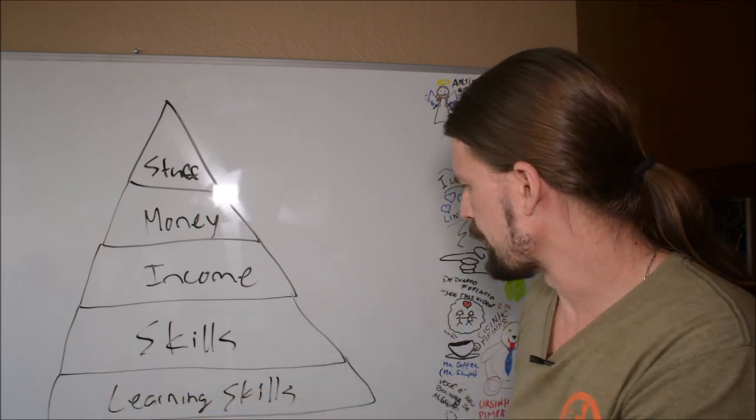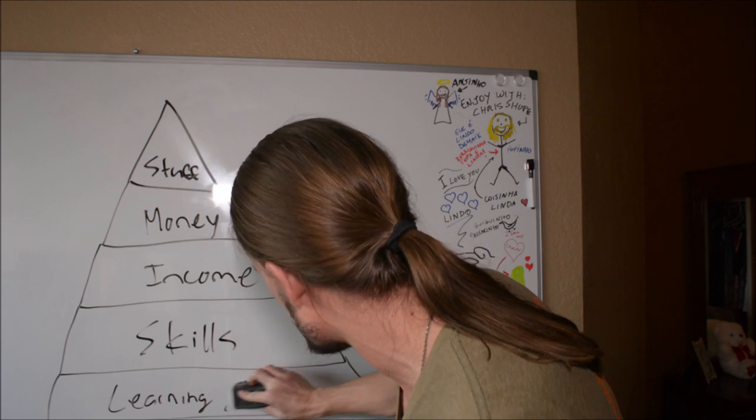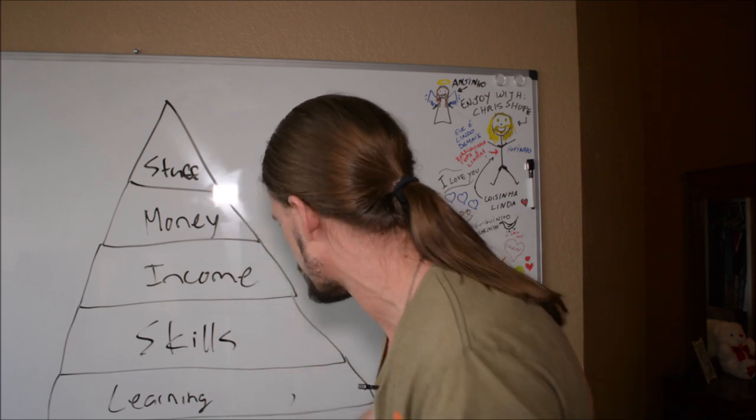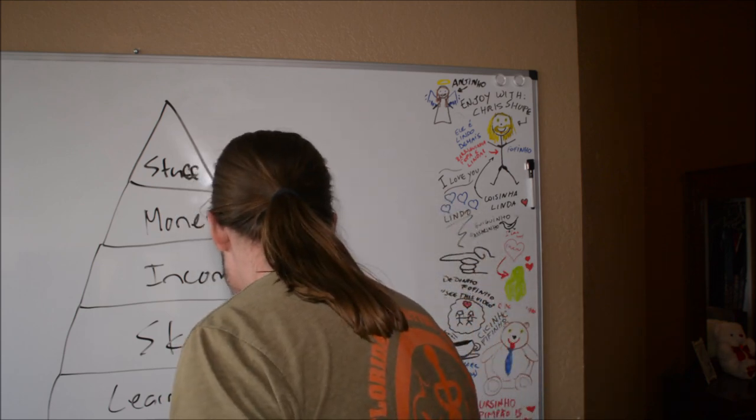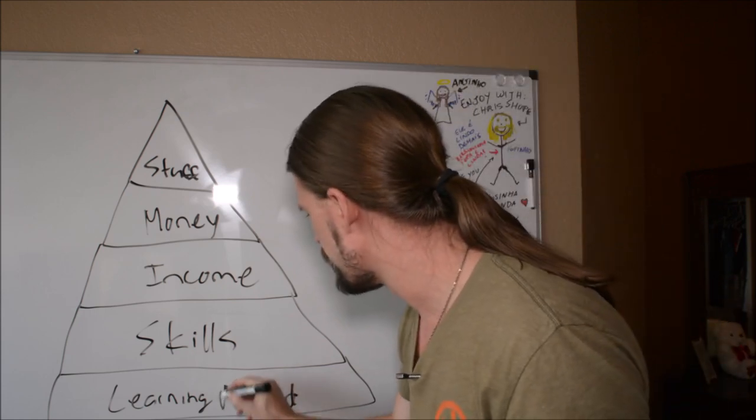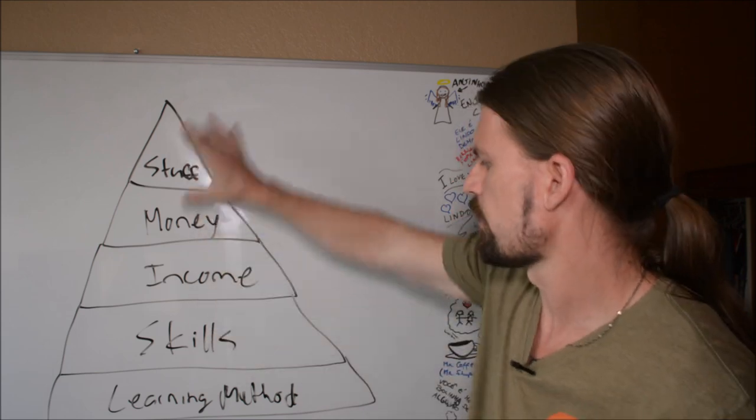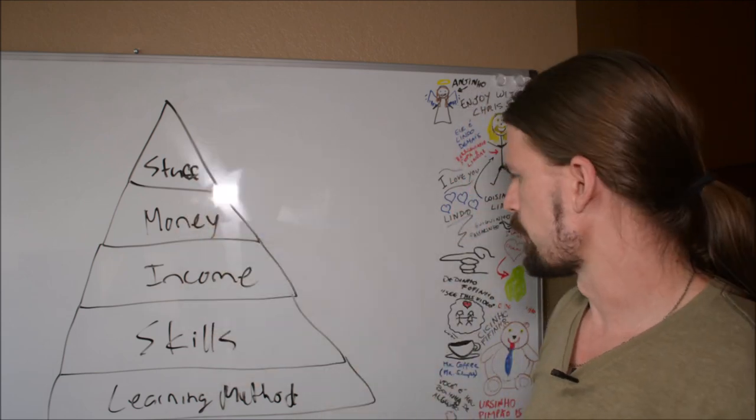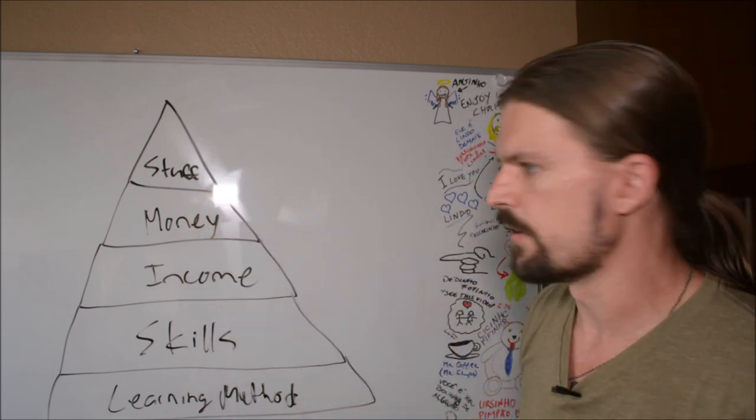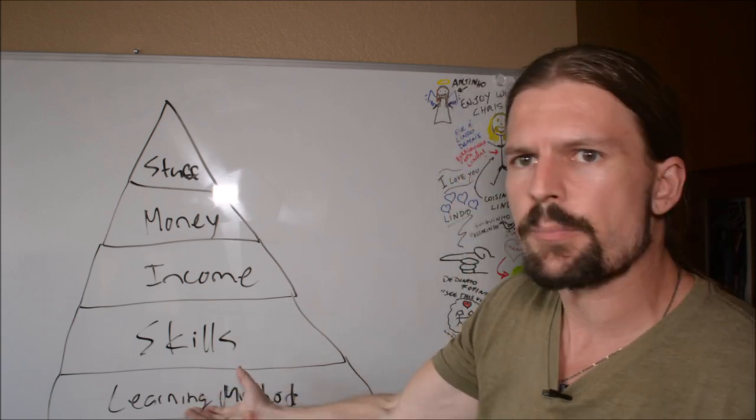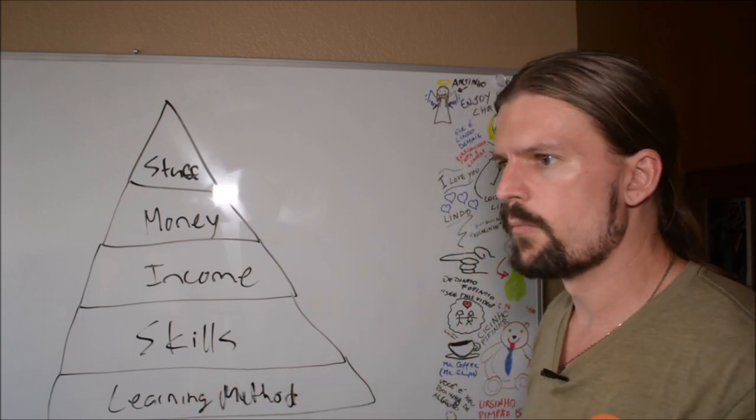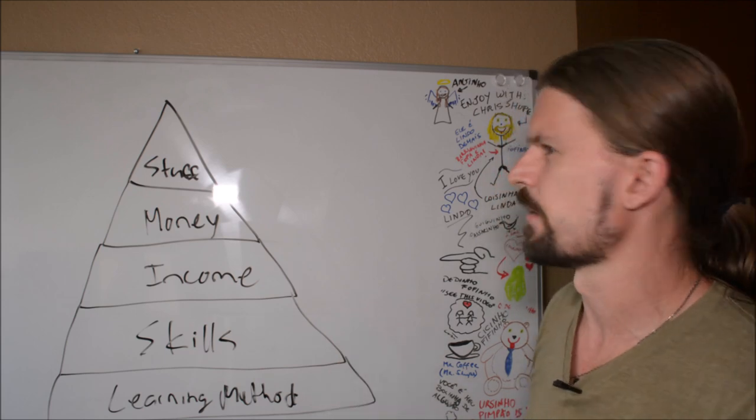And then the very bottom of the pyramid here is learning method. So I'm saying that if you have a learning method, then you have everything that you need for the rest of the pyramid here. Not saying that you shouldn't do the other things, but the further you go down the pyramid, the more security you're giving yourself.